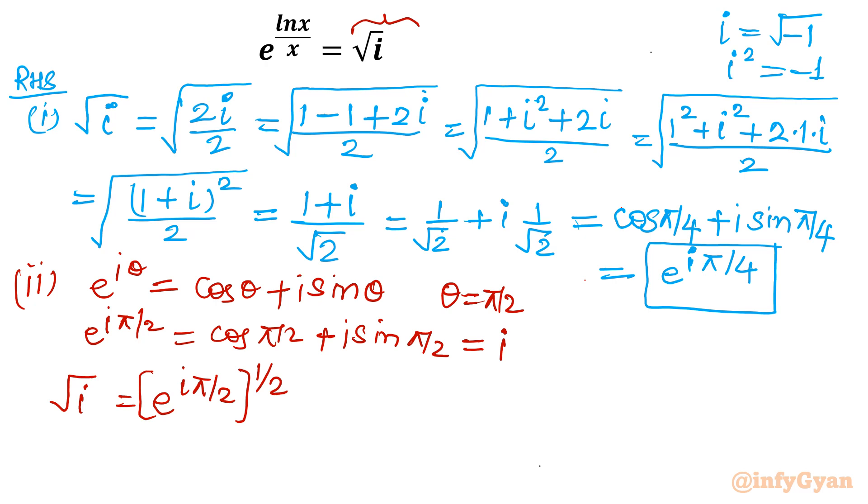Now by the exponent property a power b whole power c can be written as a power b times c. So I will take product of the exponents i times pi by 4. See it is matching with the previous one. Now one task is clear that e raised to the power i pi by 4 is our RHS.